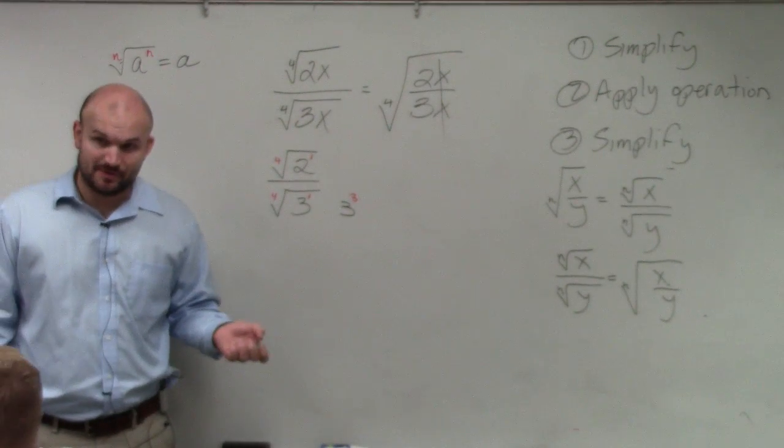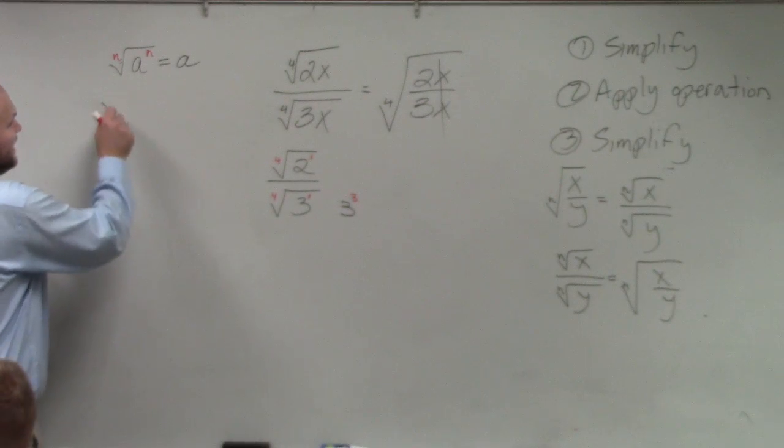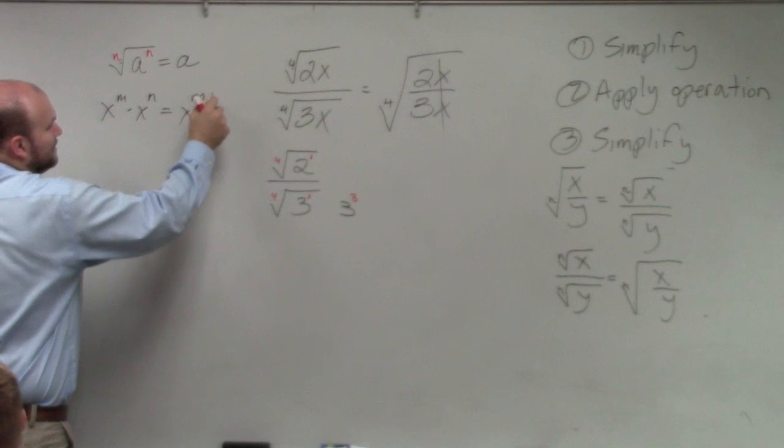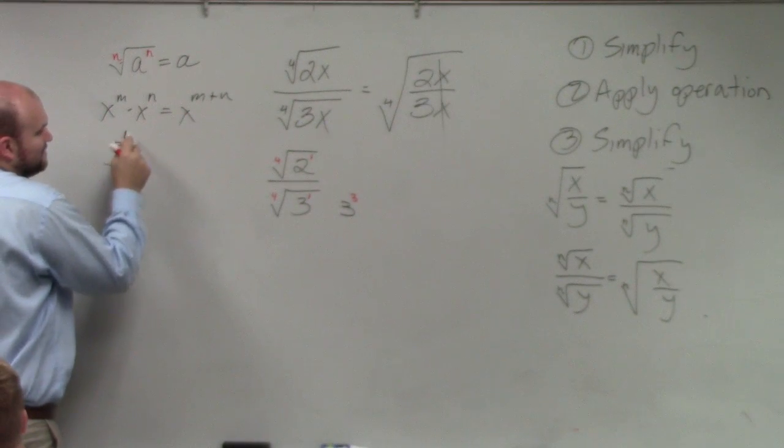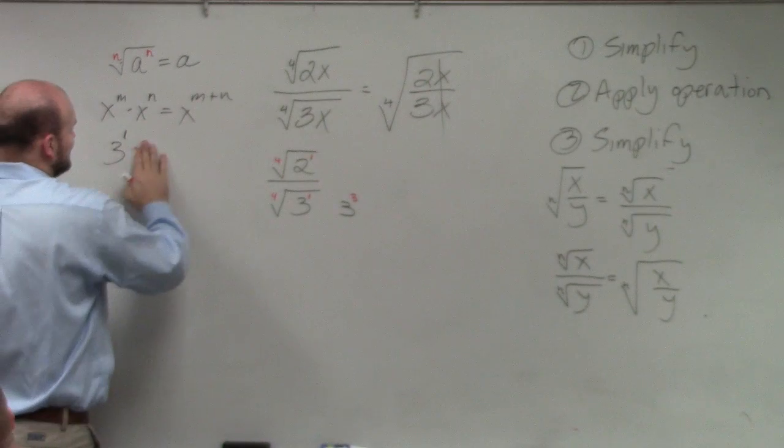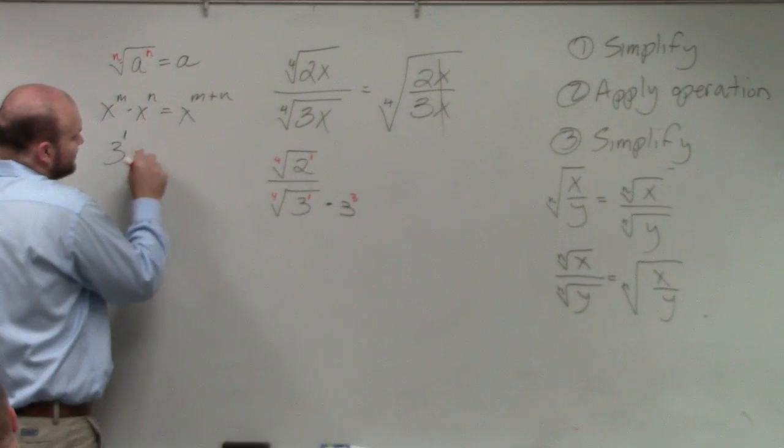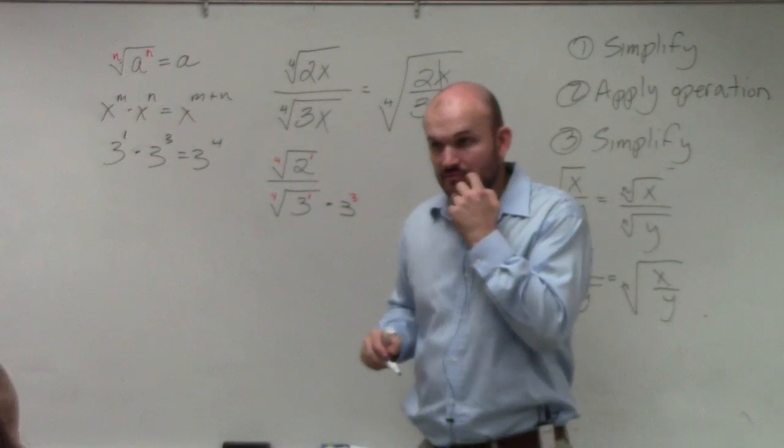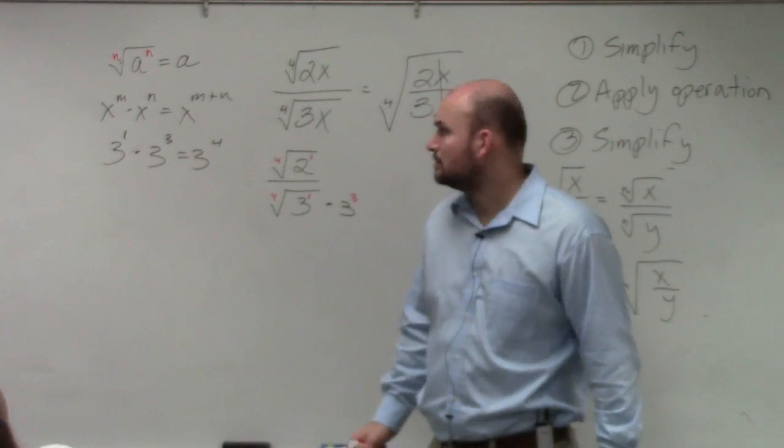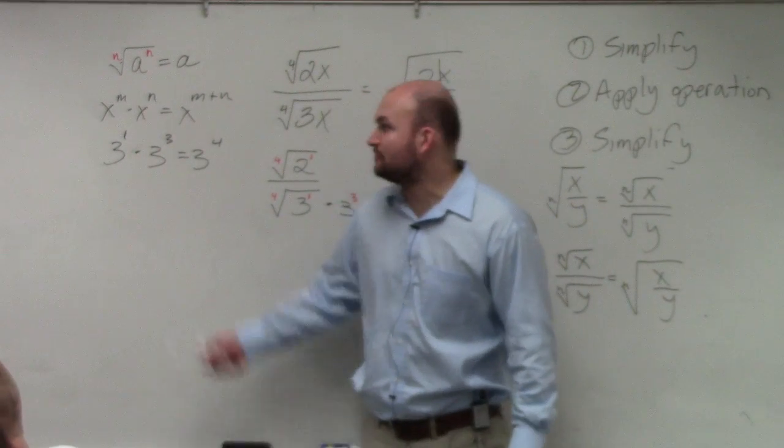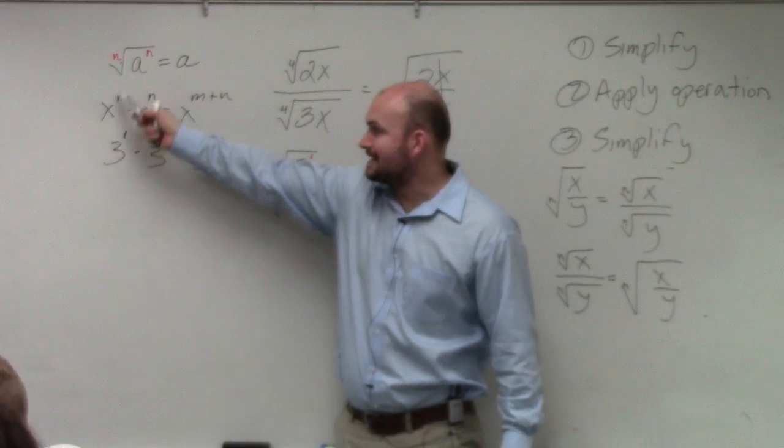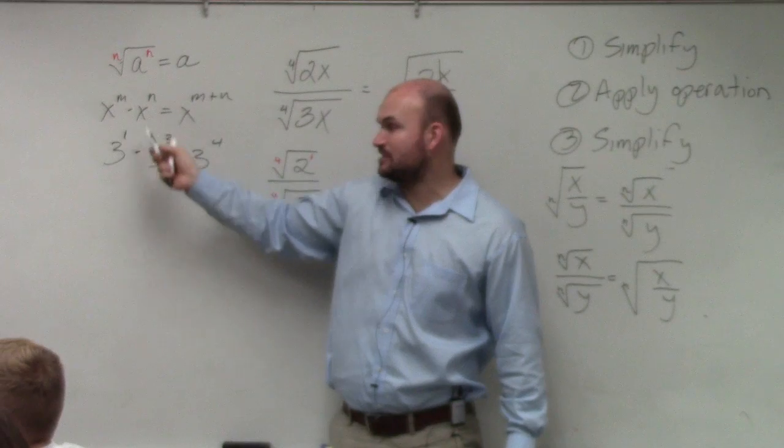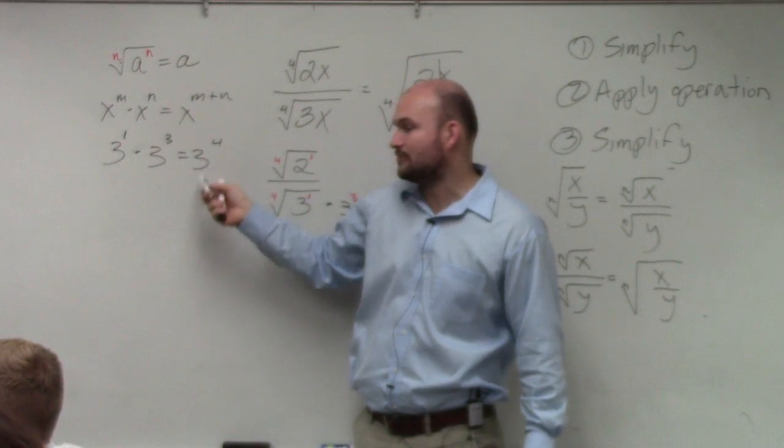Remember last class here, we did the rules of exponents? If you have x to the m times x to the n, that equals x to the m plus n. 3 to the first, 3 to the first power times 3 to the third power equals 3 to the fourth power. Because that's not what the rule of exponents says. x to the m times x to the n equals x to the m plus n. 3 to the first times 3 cubed equals 3 to the fourth.